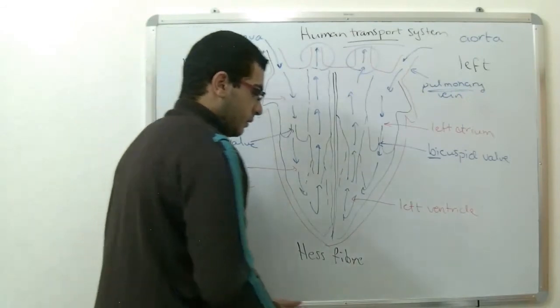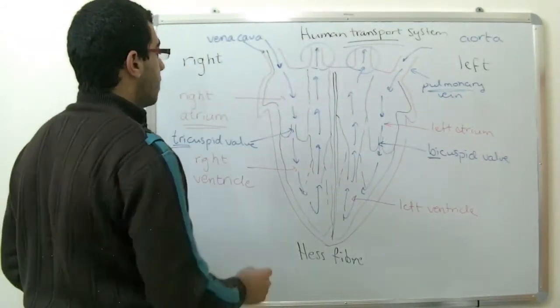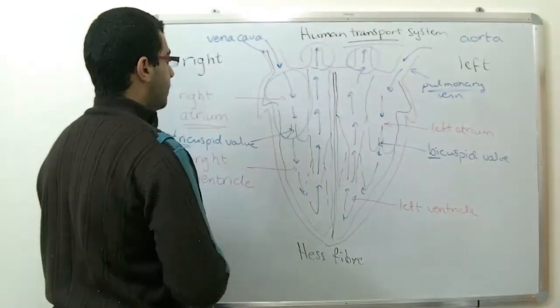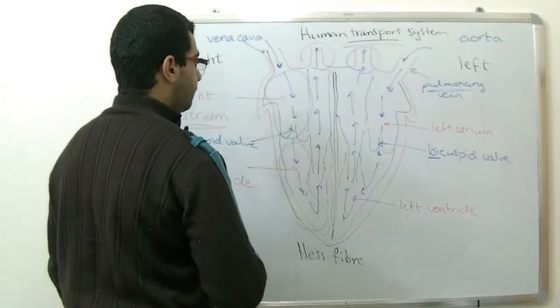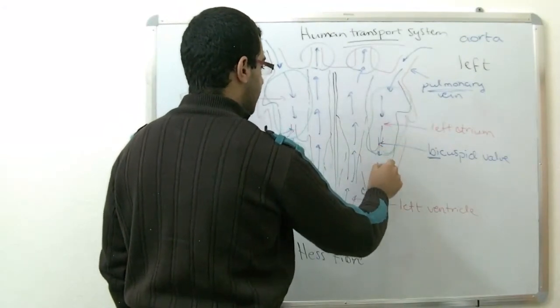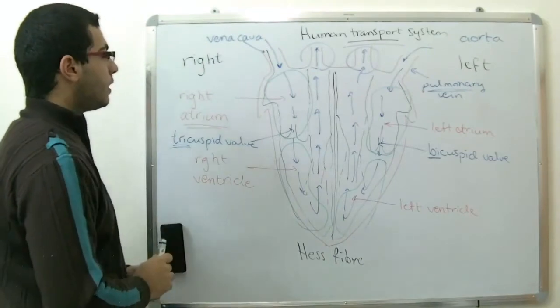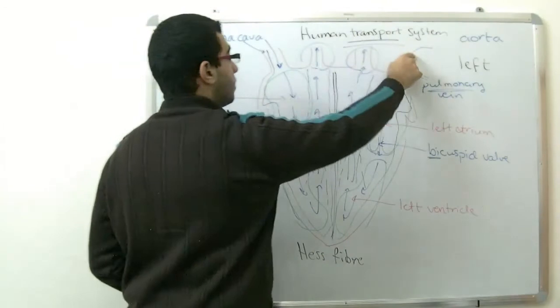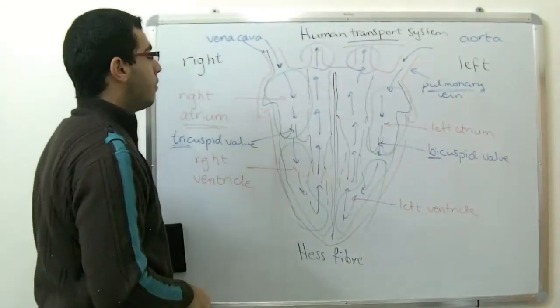This was the structure of the heart. We have four main things. It contains the right atrium, the right ventricle, the left atrium and the left ventricle. The blood enters from here, goes upwards, then enters from here and goes upwards.